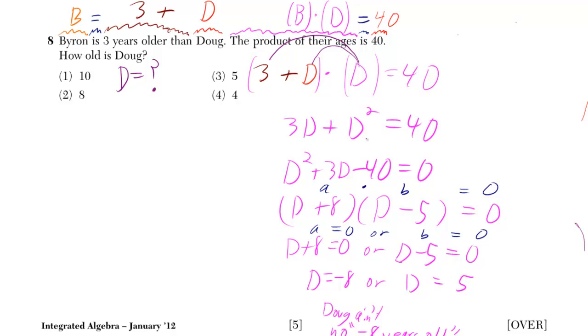Then, if we want to get this in the form of a quadratic, we've got to subtract 40 from both sides. And you get a minus 40 on the other side. On the right side, you get 0. And I'm going to write the D squared first, so I'm going to write D squared plus 3D minus 40. And that's equal to 0.